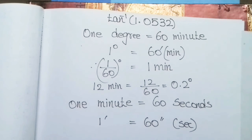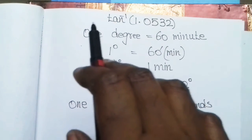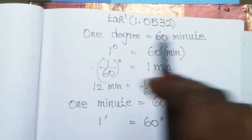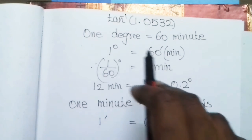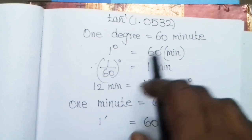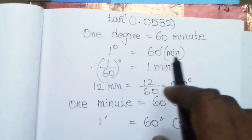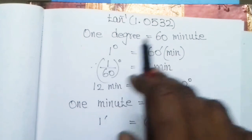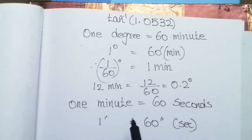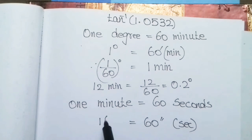1 degree is several minutes; 1 minute is several seconds. 1 degree is 60 minutes. So, you can denote degrees, minutes, and seconds. A single dash means minutes; a double dash means seconds. So, 1 degree is 60 minutes, and 1 minute means 60 seconds.